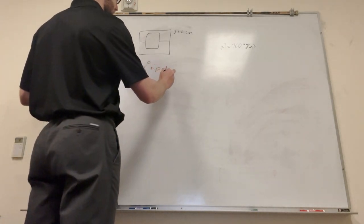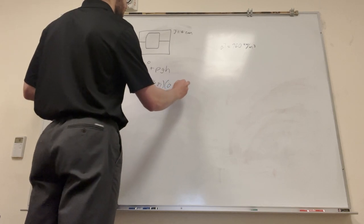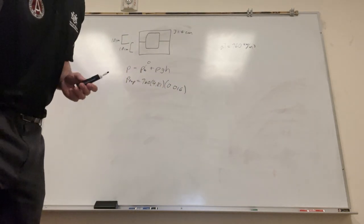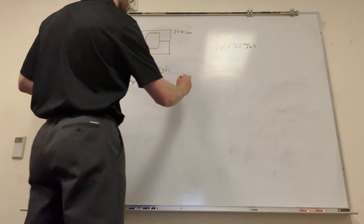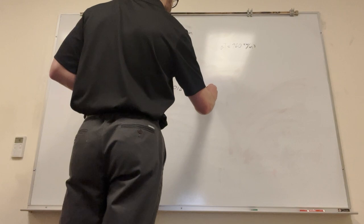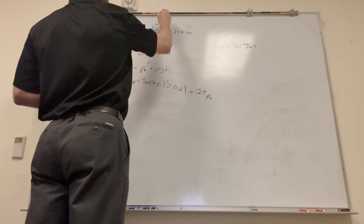So this is 1.6 centimeters, which is 0.016 meters, we have to use it in the right units. So you plug all this into your calculator, you're gonna get 124 pascals. Right, okay, so you have 124 pascals at the top.